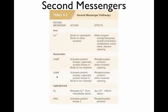There are other second messengers. Calcium can act as a second messenger — we'll see that a lot when we talk about things like muscle contraction. Other nucleotides: we just saw cyclic AMP; you can also have cyclic GMP. There are also lipid-derived molecules like inositol triphosphate and diacylglycerol. They all do basically the same thing. The more signal transduction examples you look at, the more you'll find they have a lot more in common than you might think.